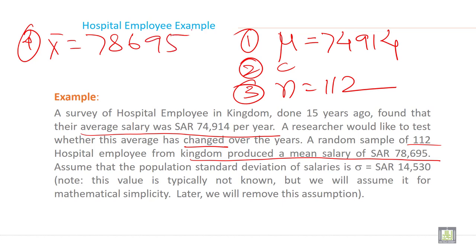And the fifth information given a standard deviation. A standard deviation is equal to 14,530. So in this slide, these five information is given. Just keep in mind these five information for all to understand the eight steps of hypothesis testing.